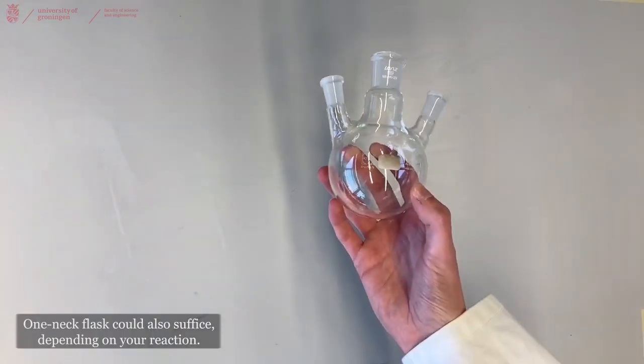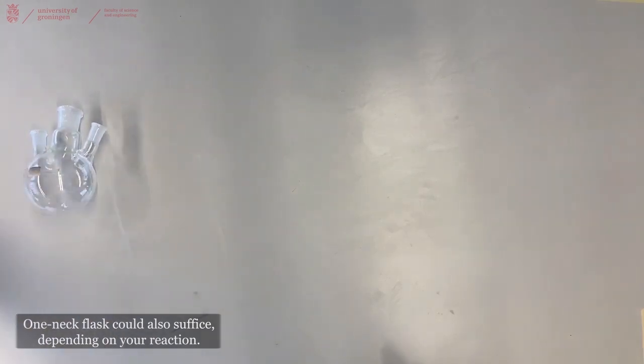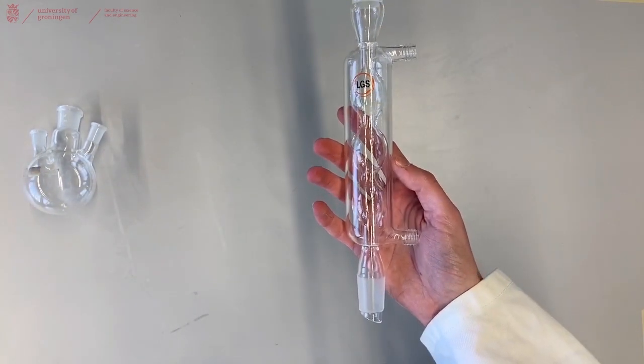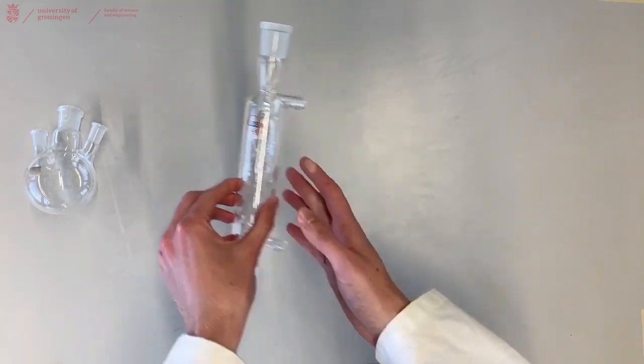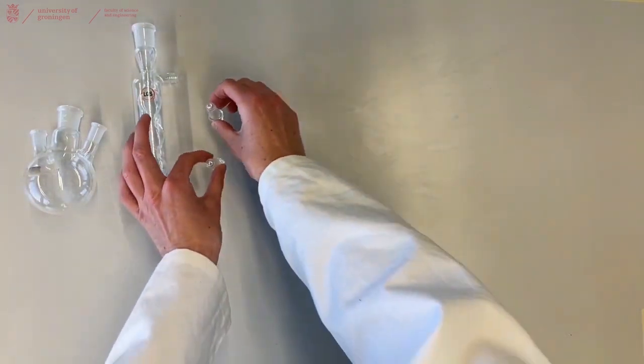You will need one three neck flask for your solution, a bulb condenser to condense your liquid, and two stoppers for the two side necks of your three neck flask.